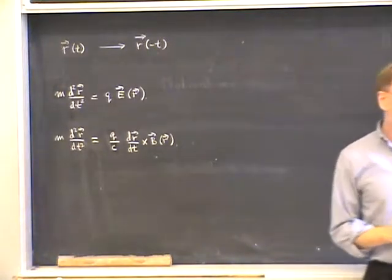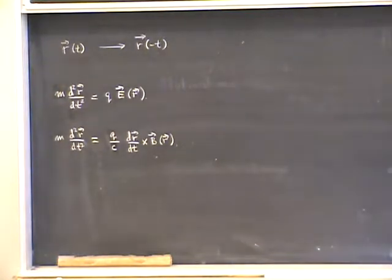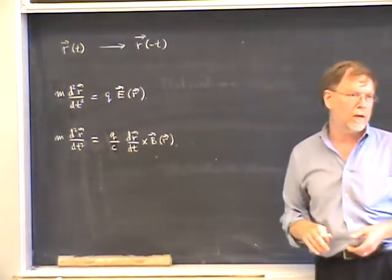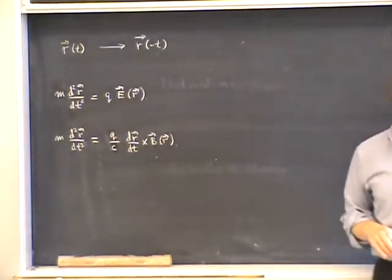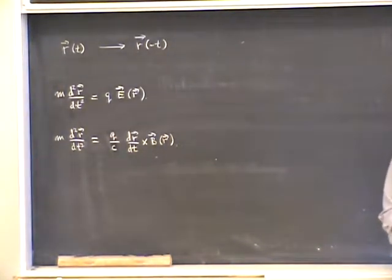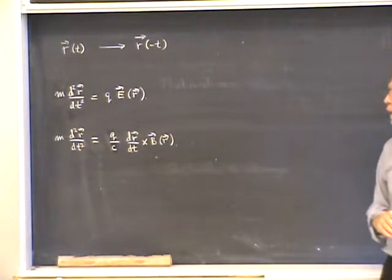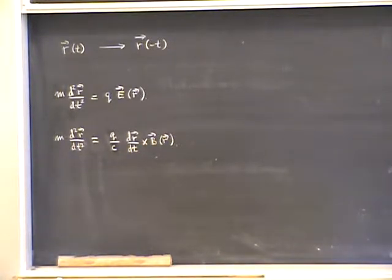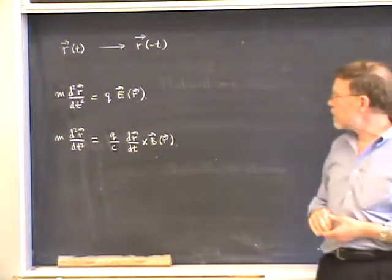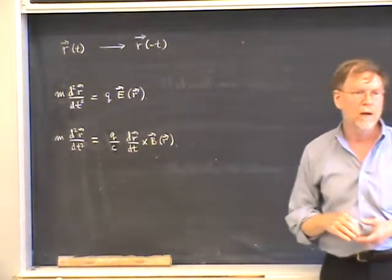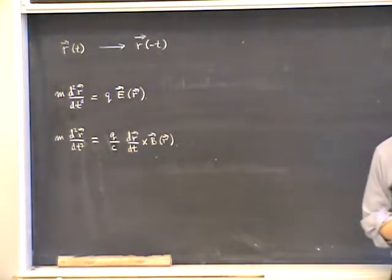In making these statements, it depends on how you define the system. Here we're thinking of the electric and magnetic fields as just being given external fields in which the particle is moving. There was a similar issue, you'll recall, with regard to parity. However, if we include the charges and currents which produce the electric and magnetic fields in the definition of the system, then there's a different situation.